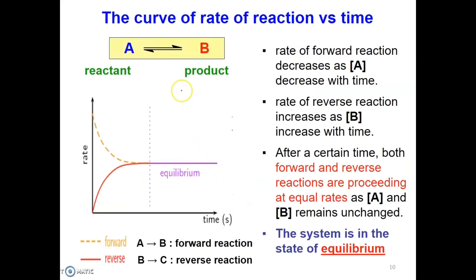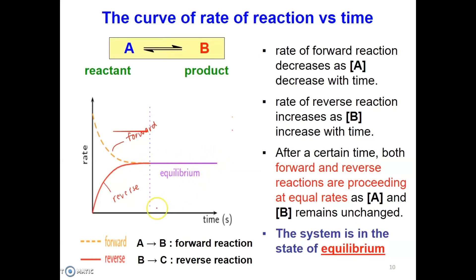This curve shows how the rate of reaction changes against time. The dotted line represents the rate of the forward reaction, and the red line represents the rate of the reverse reaction. The rate of the forward reaction decreases as the concentration of reactant A decreases over time, while the rate of the reverse reaction increases as the concentration of product B increases. After a period of time, both forward and reverse reactions are proceeding at the same rate, and we can say the system is now at the state of equilibrium.